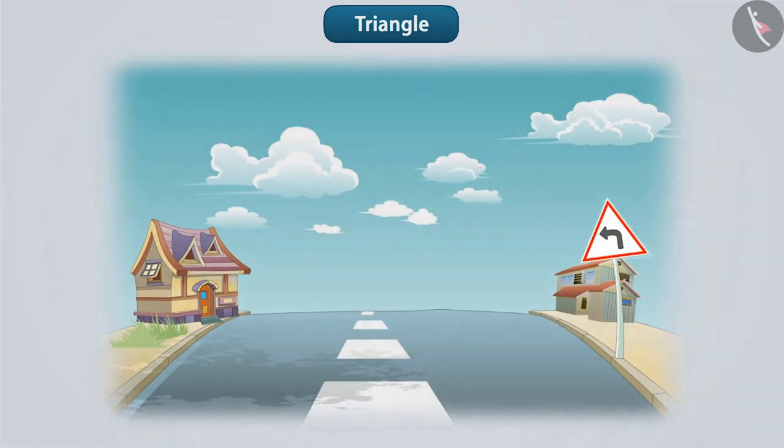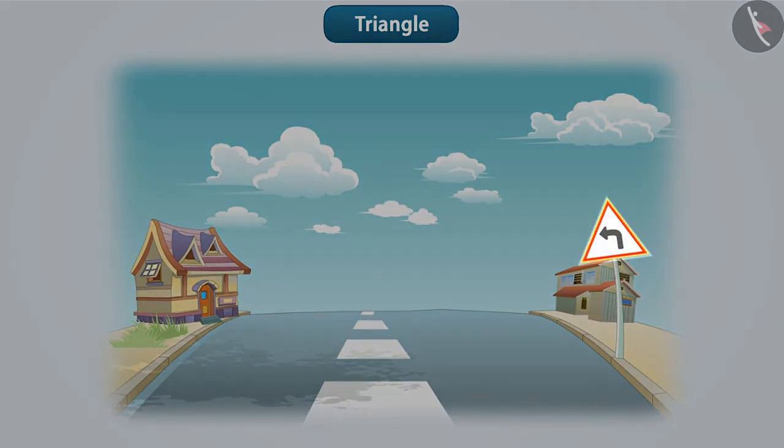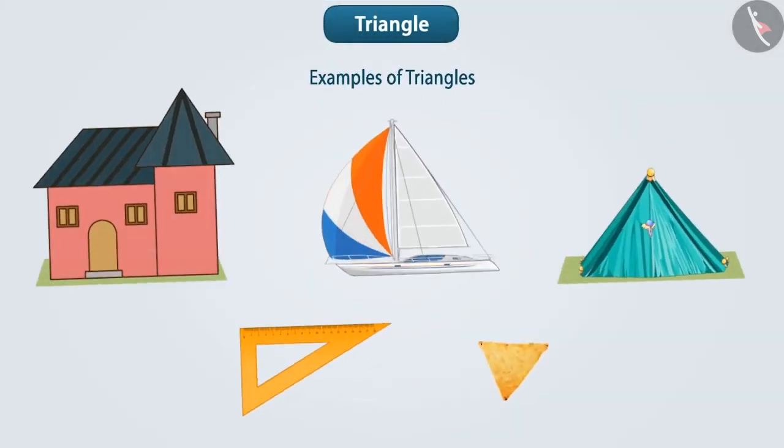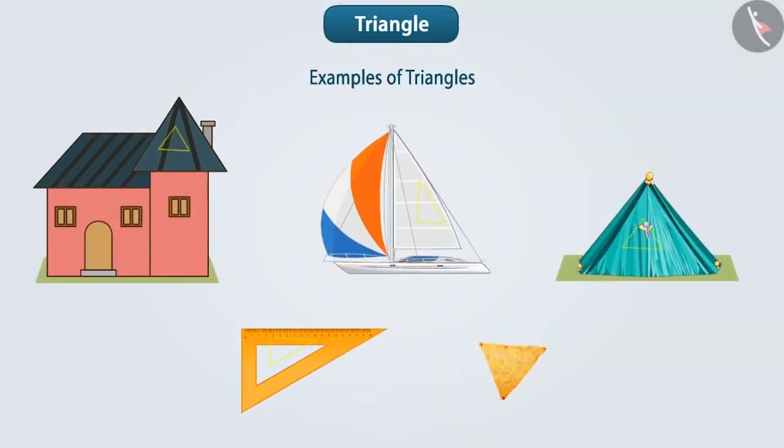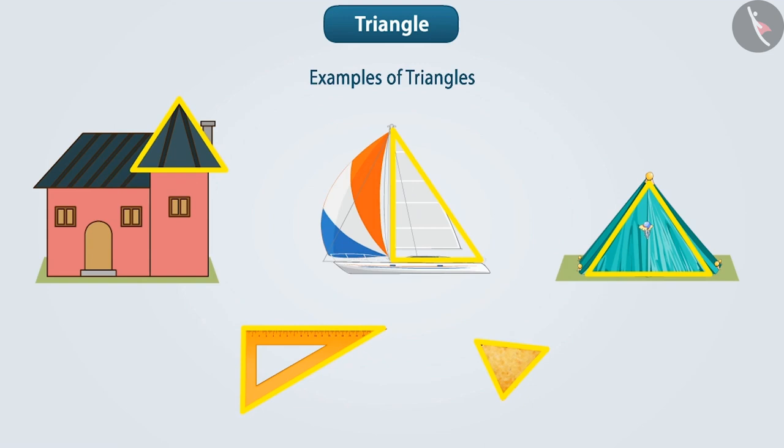You must have seen this type of sign on the road. We call it a triangle. Similarly, in daily life, we see many things that give us the appearance of the shape of a triangle. Some of which are shown here. Pause the video and think about these.